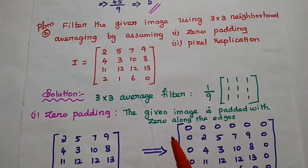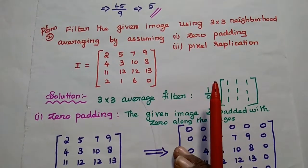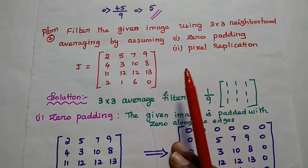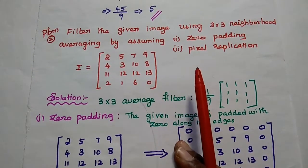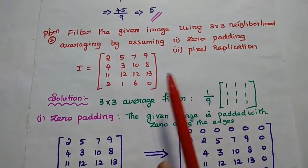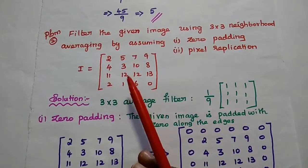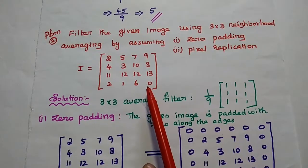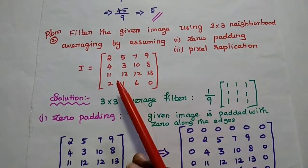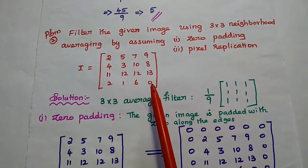Filter the given image using 3 by 3 neighborhood averaging by assuming 0 padding, and the next condition is pixel replication. The given image data is a 4 by 4 matrix: 2, 5, 7, 9, 4, 3, 10, 8, 11, 12, 12, 13, 2, 1, 6, 0. We are going to find out the filter output of this image data using the average filter.